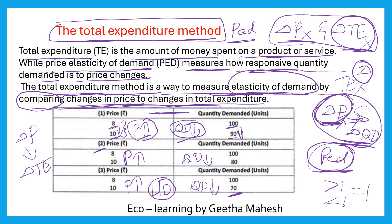To calculate total expenditure, we use price multiplied by quantity. For example: 8 into 100 is 800; 10 into 90 is 900; and 10 into 70 is 700. So as price changes, the total expenditure also changes accordingly.